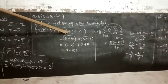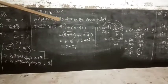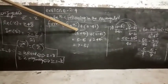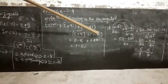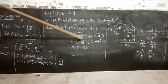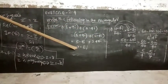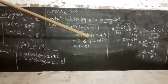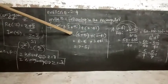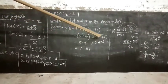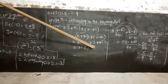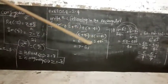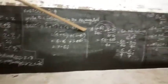First problem: (5 + 9i) + (2 - 4i) whole bar. Split using the first property: (5 + 9i) whole bar plus (2 - 4i) whole bar. Taking conjugates: 5 minus 9i plus 2 plus 4i. Combining real parts: 5 plus 2 is 7. Combining imaginary parts: minus 9i plus 4i gives minus 5i. Result: 7 minus 5i.